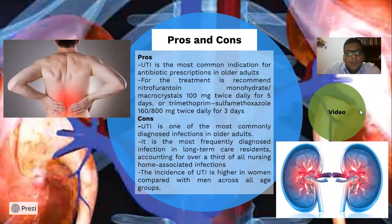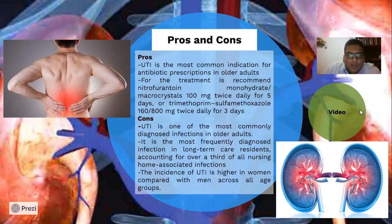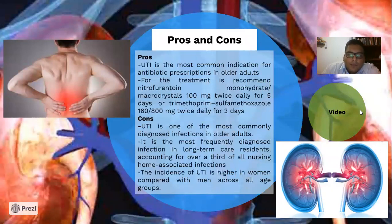UTI is the most common indication for antibiotic prescriptions in older adults. For treatment, it's recommended nitrofurantoin monohydrate/macrocrystals 100 mg twice daily for five days, or trimethoprim-sulfamethoxazole 160/800 mg twice daily for three days. UTI is one of the most commonly diagnosed infections in older adults and the most frequently diagnosed infection in long-term care residents, accounting for over a third of all nursing home-associated infections.